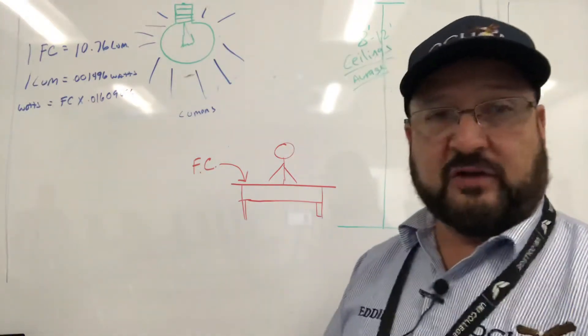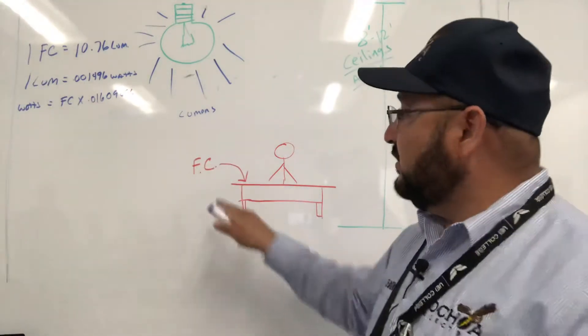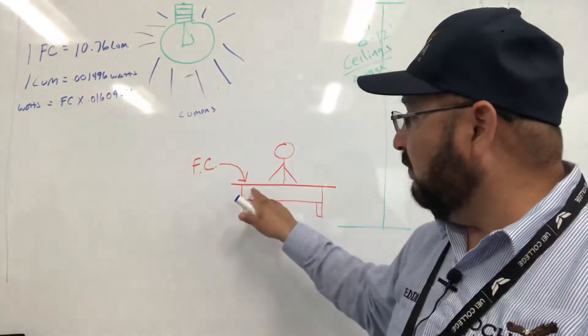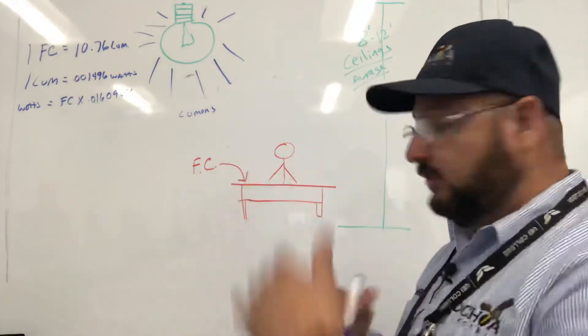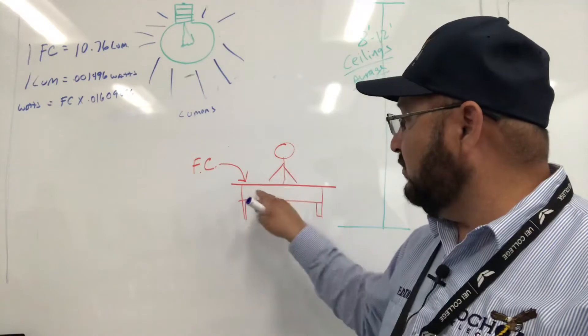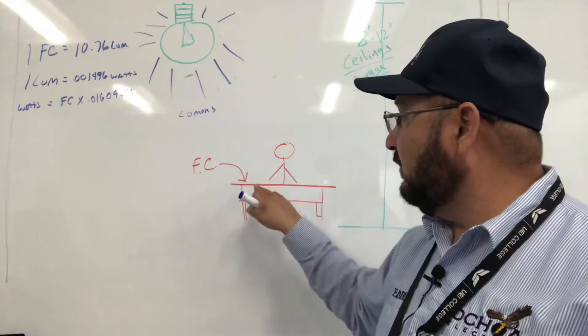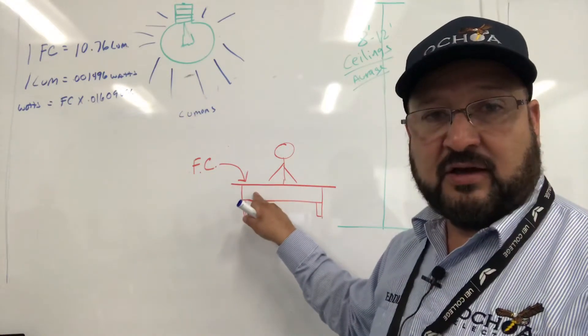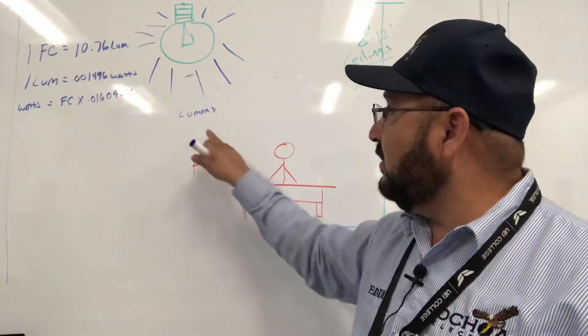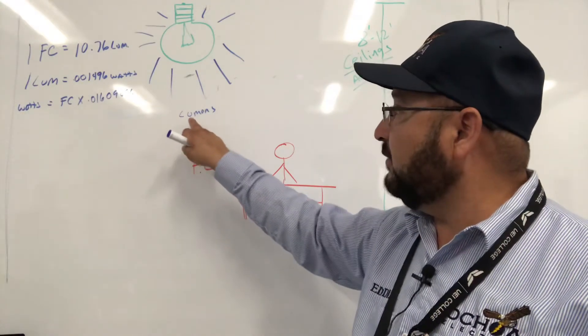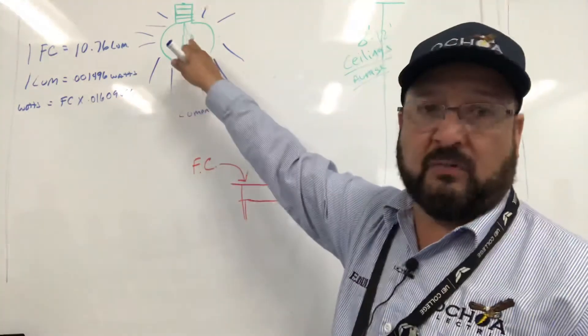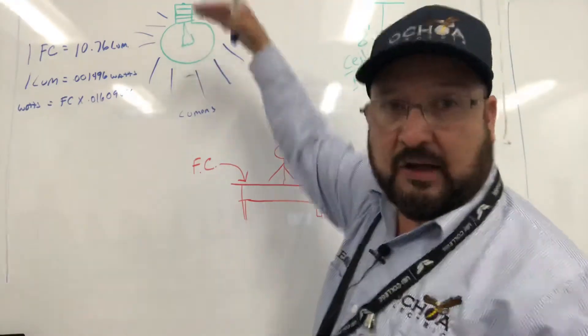But the purpose of the lumens is the foot candles, what we see in a one square foot area. So if this is you, this is a desk, how much foot candles do we need to see? And that's going to be determined by how much lumens you have in your light bulb and how high the light is or how low the light is.